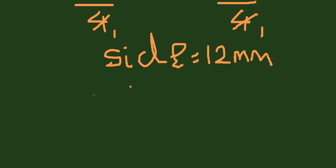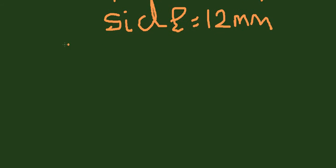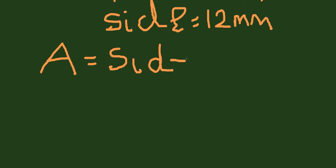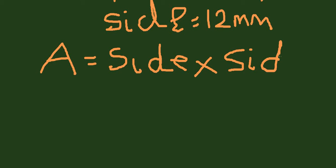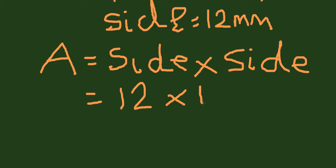So once we have the side, it means now we can find the area. The formula for area of a square equals side times side. Our side is 12, so it will be 12 times 12, which is 144.